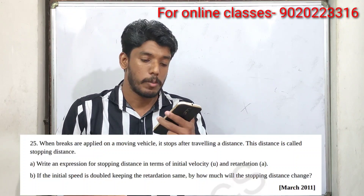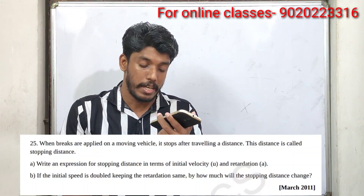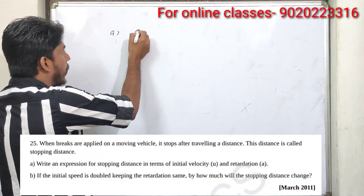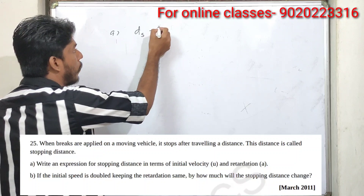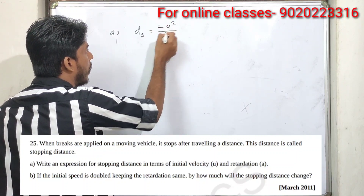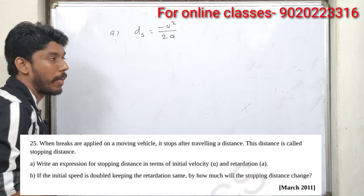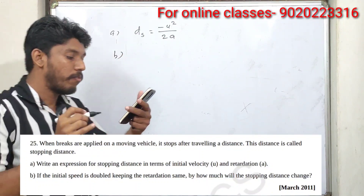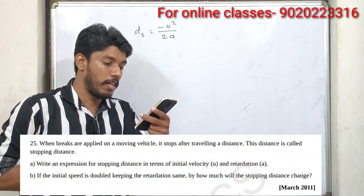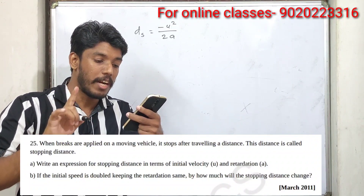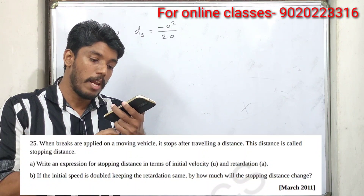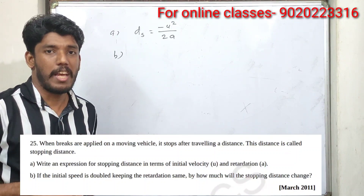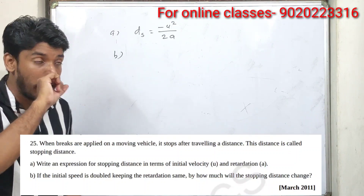Part A: write an expression for stopping distance in terms of initial velocity and retardation. The stopping distance ds is represented by the formula: ds equals minus u squared divided by 2a. We have to solve using minus u squared divided by 2a.